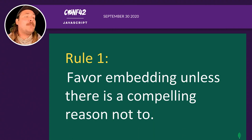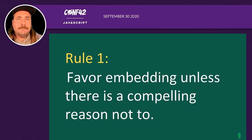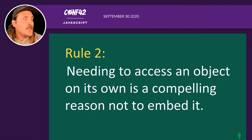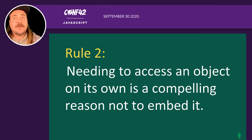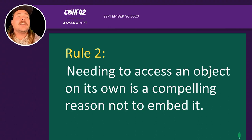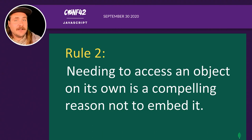I do have a couple of personal rules I follow when designing a MongoDB schema. Rule one: I favor embedding as my first go-to unless I can articulate a reason not to embed. Compelling reasons include not needing the data every time, or it being too large. Rule two: needing to access an object on its own is a compelling reason to reference it. For example, if another part of your application just uses addresses, splitting that off could increase performance.